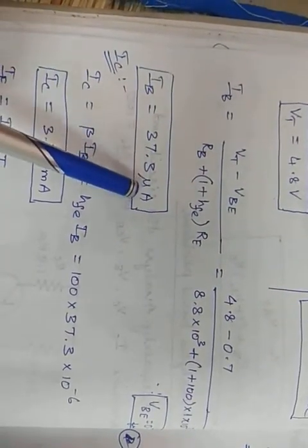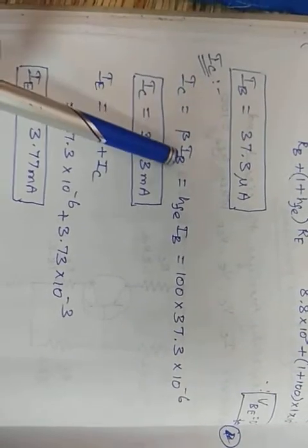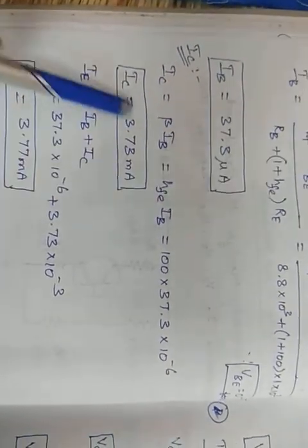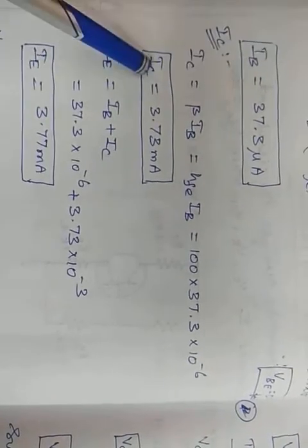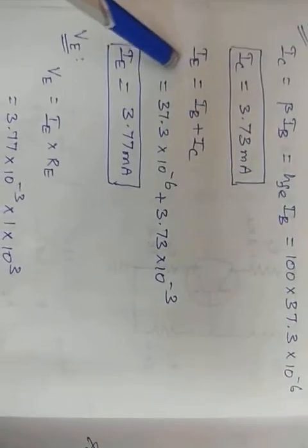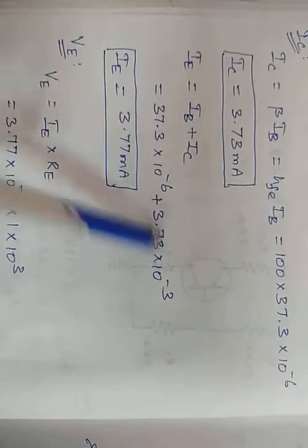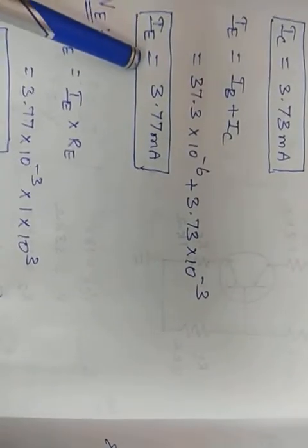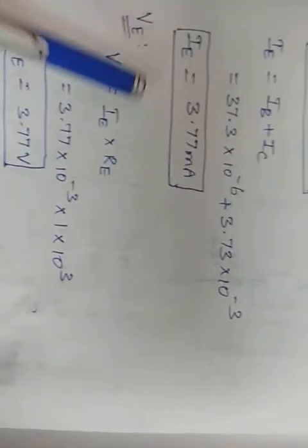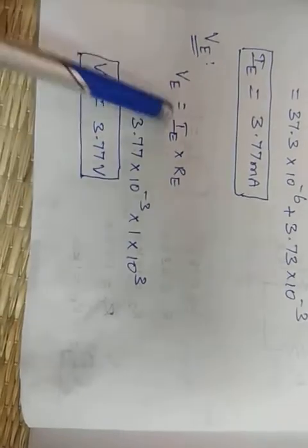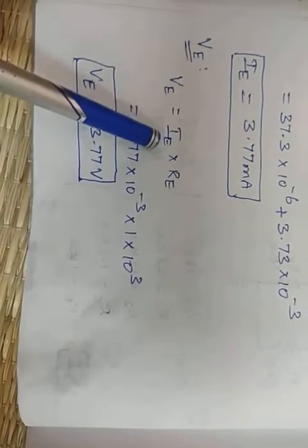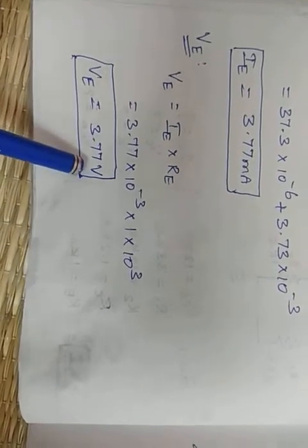IC = HFE × IB = 100 × 37.3μA = 3.73 milliamps. IE = IB + IC. Substituting, IE = 3.77 milliamps. VE = IE × RE. RE is given, IE was just calculated. Simplifying, VE = 3.77V.